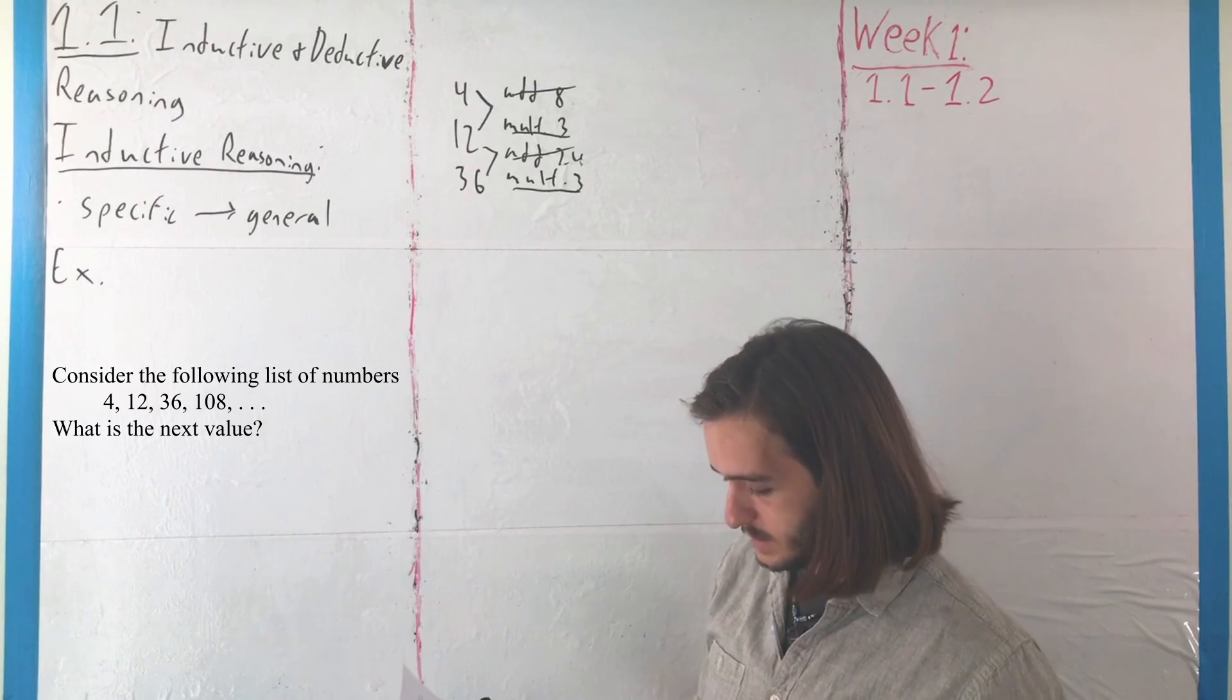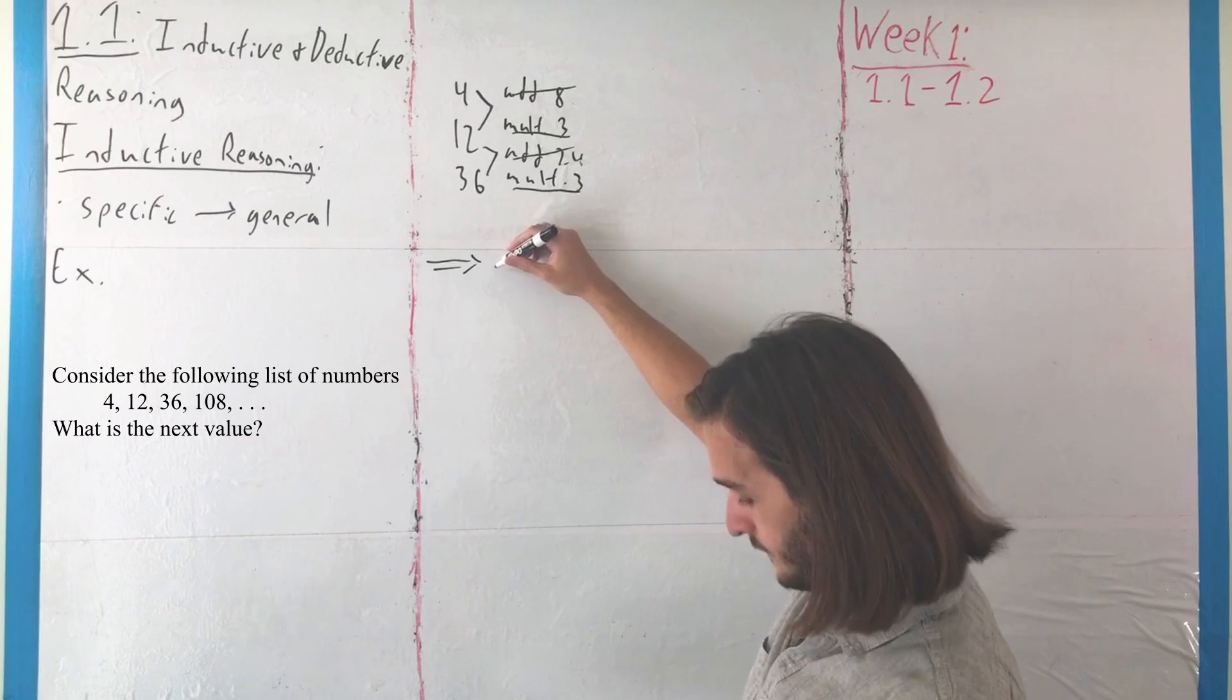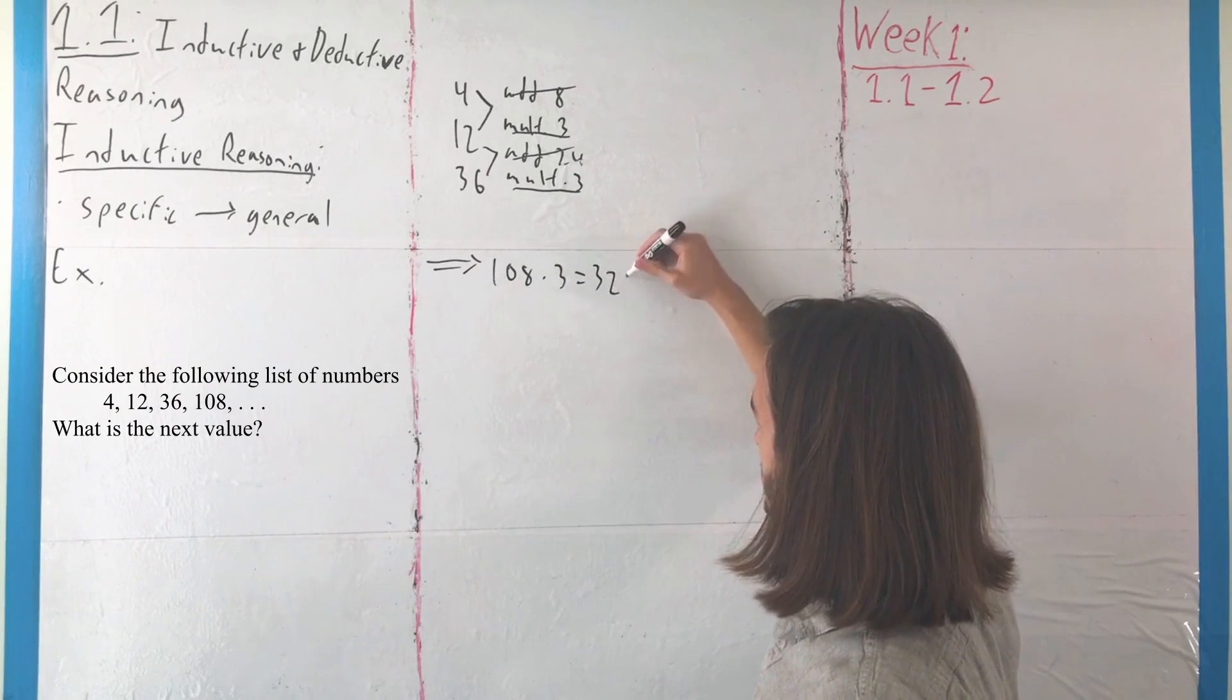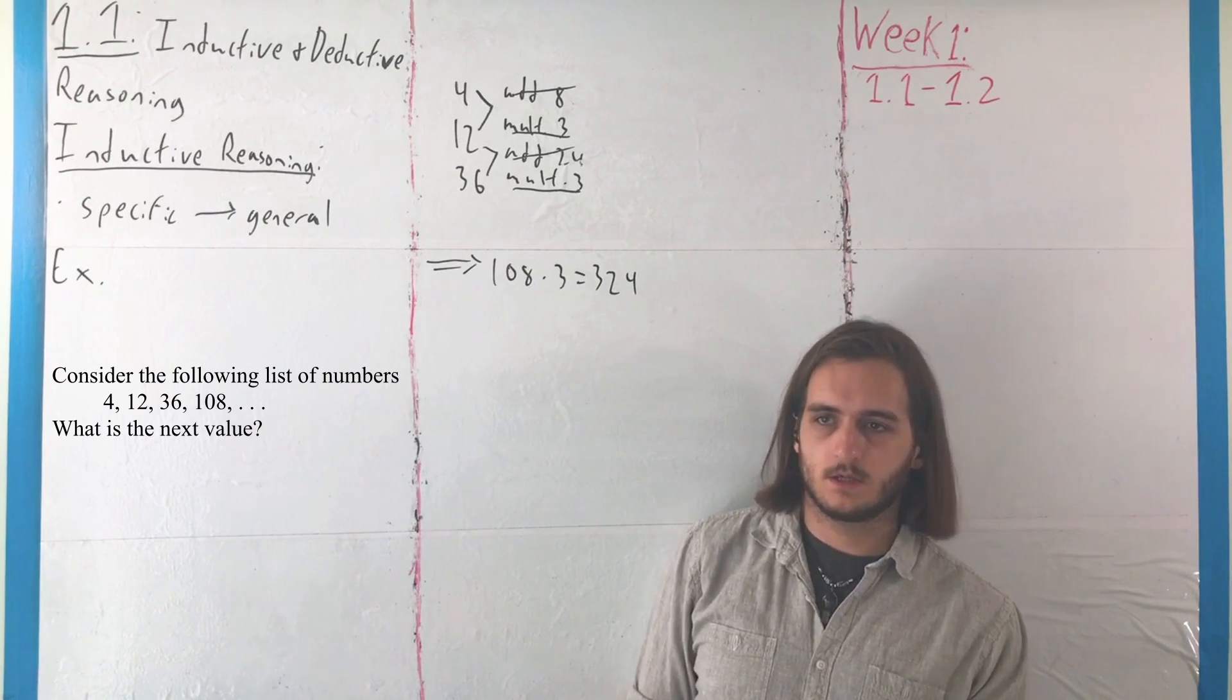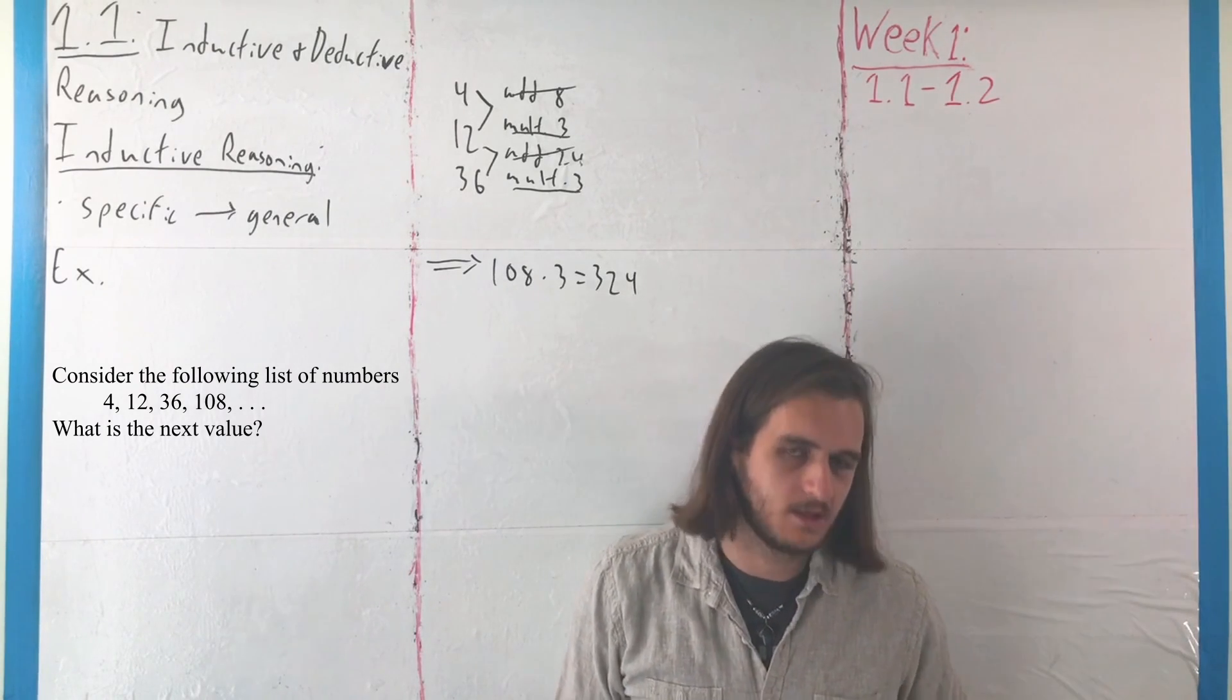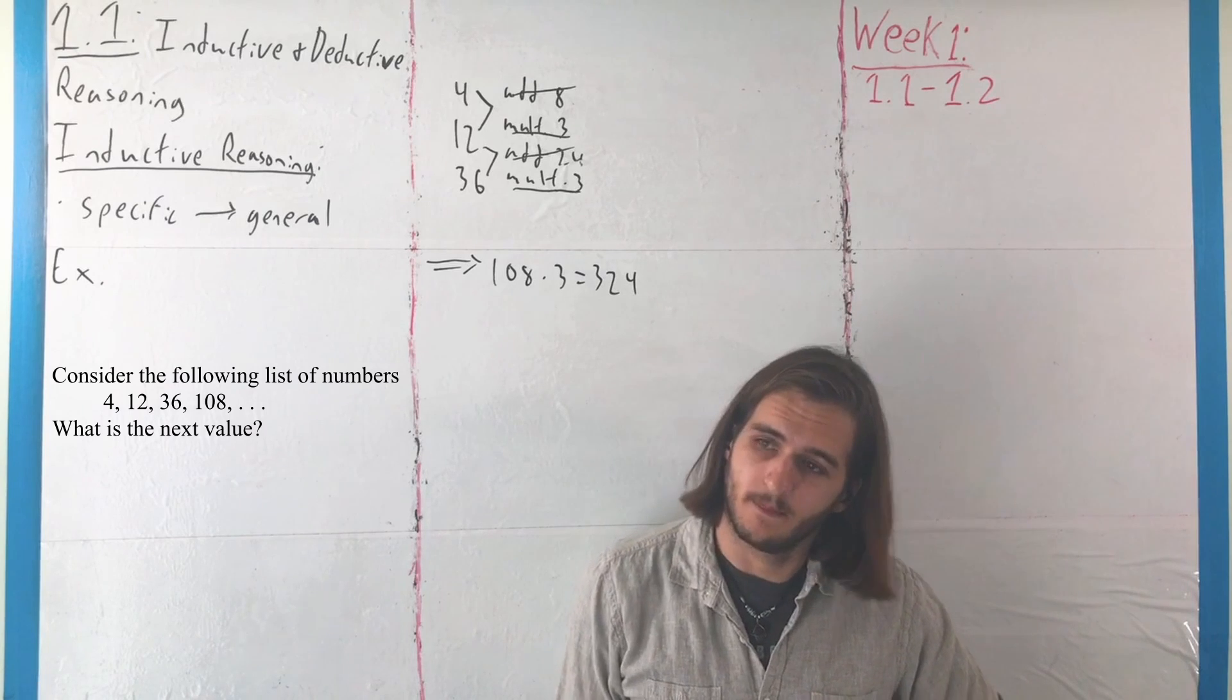So, if you want to keep going from here, you want to get your next number, then probably what we would want to do here is take the value that we have for the fourth number, 108, and multiply that by 3, where 108 times 3 is going to end up being 324. Where I will say for this, that we've only got four examples to build off of. For our purposes in this class, that's usually going to be enough. If we had less than that, we'd start to question things, maybe. And, if we had more than that, we'd maybe be a bit more confident.